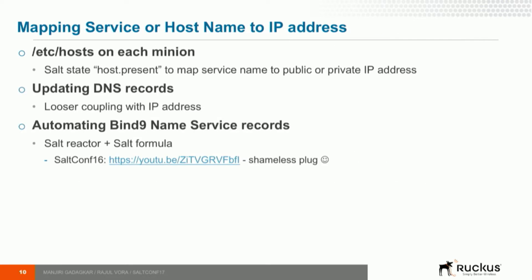Coming back to mapping a service name to an IP address: you could do that in /etc/hosts — it's a bit ugly but you could do it using Salt's built-in host.present state. You could also manage your own DNS server, which is non-trivial effort. As a shameless plug, at SaltConf16 I presented a session on how to manage a BIND9 name service using a Salt reactor and Salt formula, where you could automatically add and delete records in DNS.